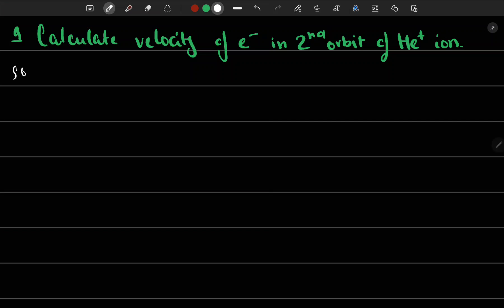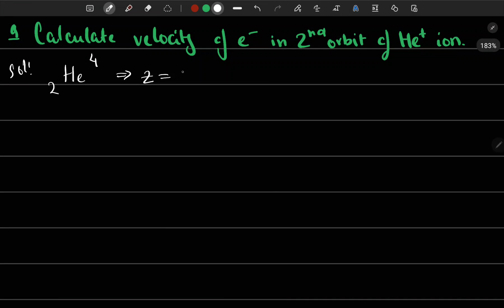So let us start this solution. In helium plus ion, helium's atomic number is 2 and mass is around 4, 4.0026 to be exact, but for calculating we use 4. So therefore Z is equal to 2.